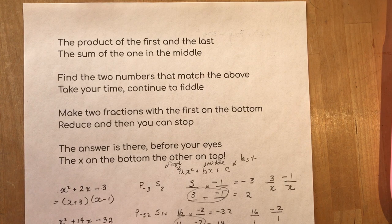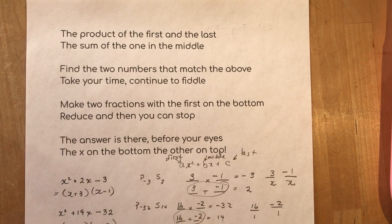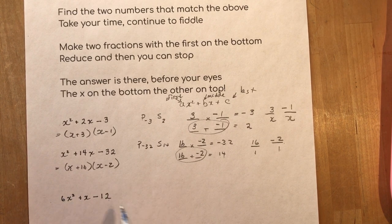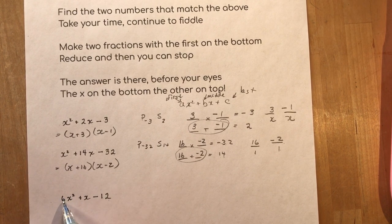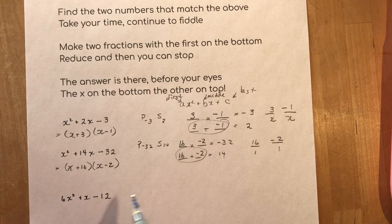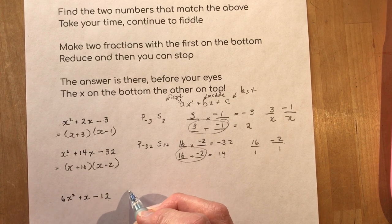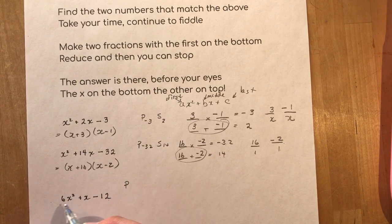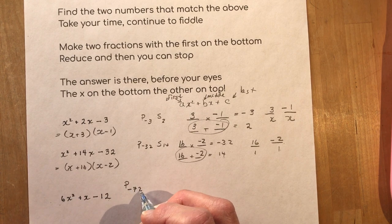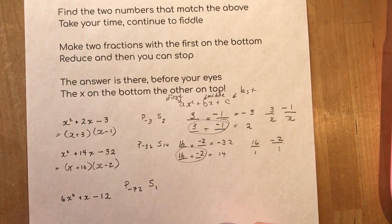Now watch this next one. This is where you're going to love it. Here's one. These next ones have a coefficient that is not one. So now the product again is the first and the last. So six times minus 12 is minus 72. The sum of the one in the middle. One.